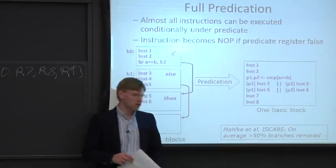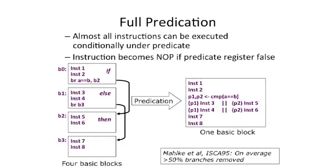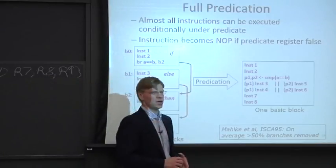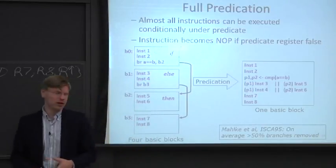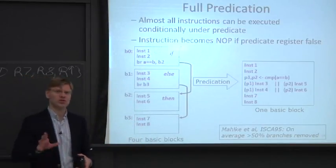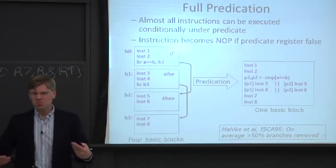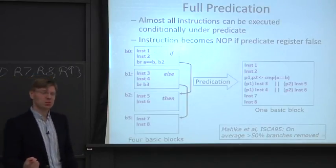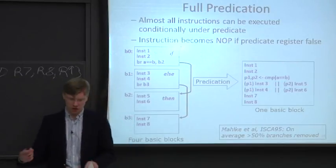Results from ISCA '95 by Scott Melke showed that on average you can remove about 50% of branches using full predication. However, full predication is not easy to build — very few instruction sets have implemented it. Itanium is probably the closest real processor with near-full predication. The HP Plato instruction set apparently had full predication. You need to add an extra predicate register file, bypass those predicates, and manage associated overheads.